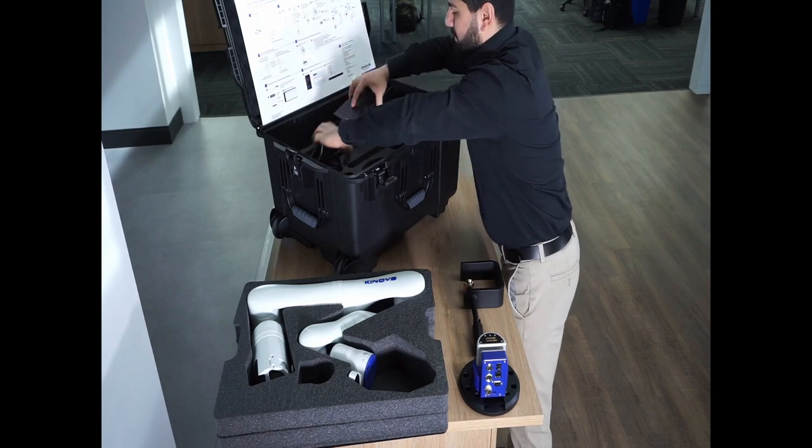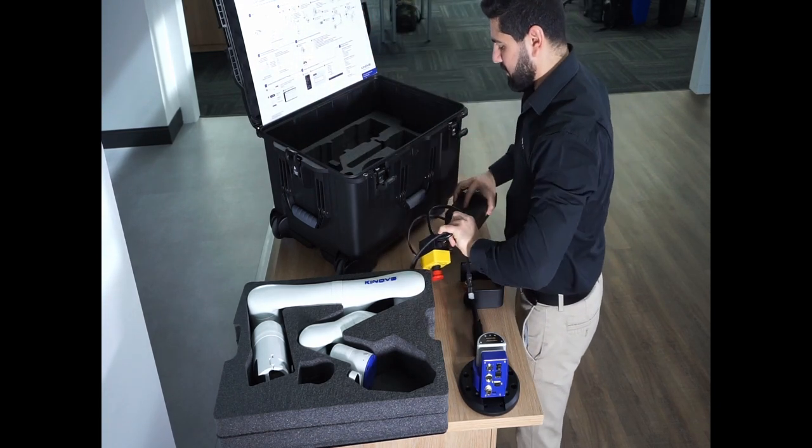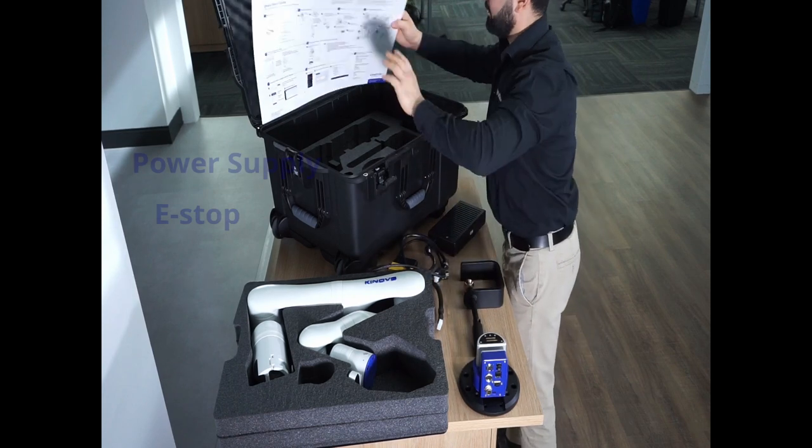In the second stage of the box, you will also find the emergency stop or e-stop, and the power supply.